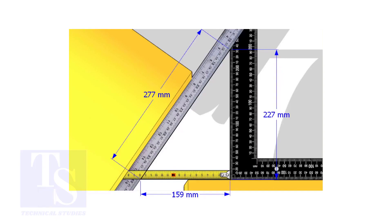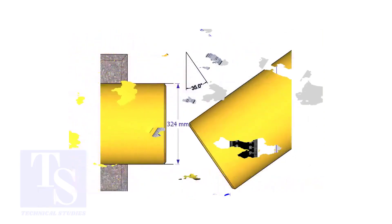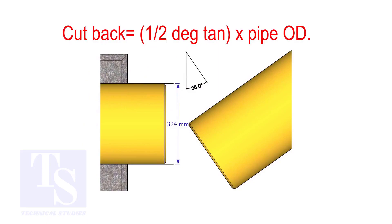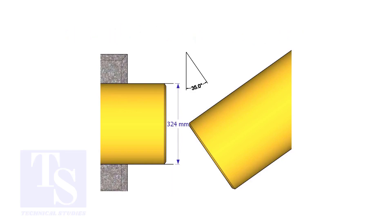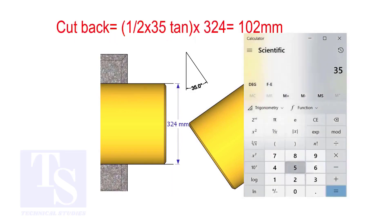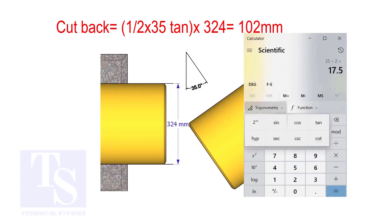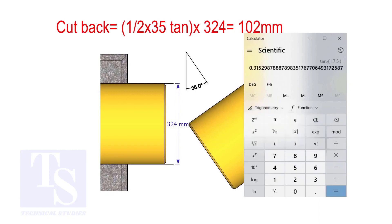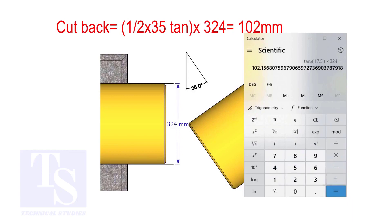How to calculate the cutback of a single cut miter. When it is a single cut, the cutback is: half degree tan, multiplied by the OD of the pipe. The answer is 102 millimeters.